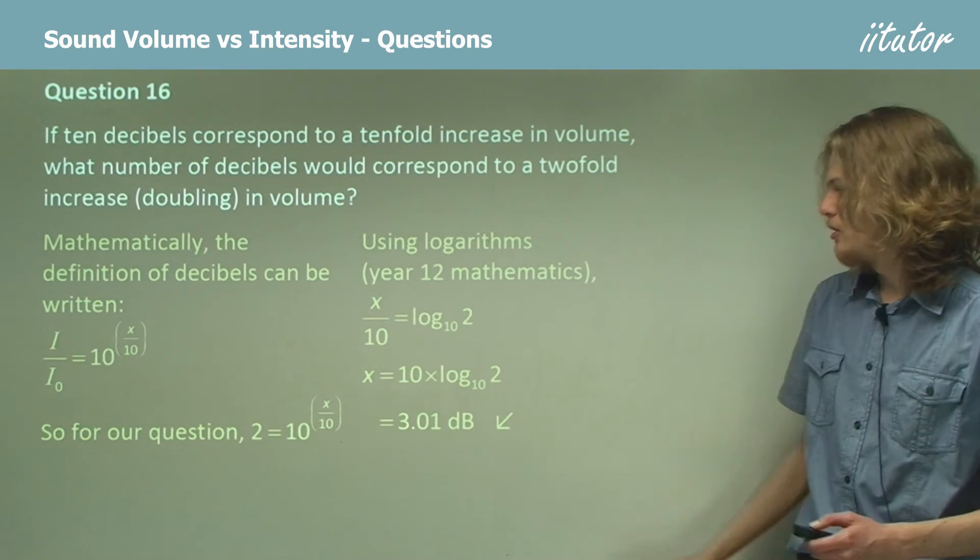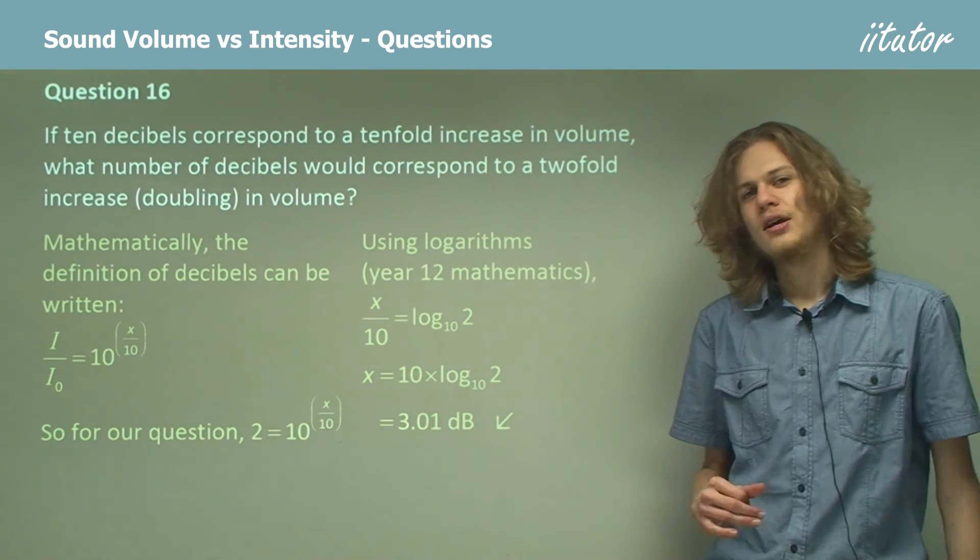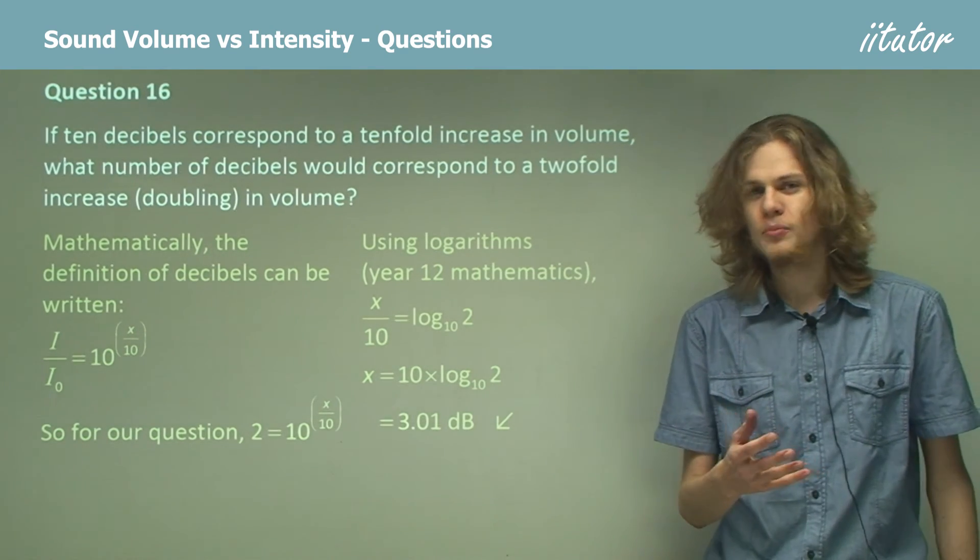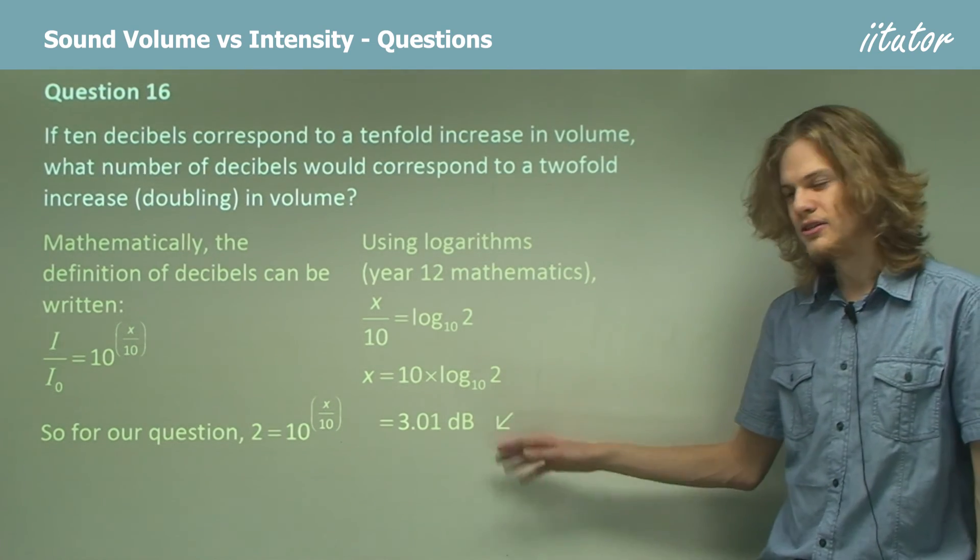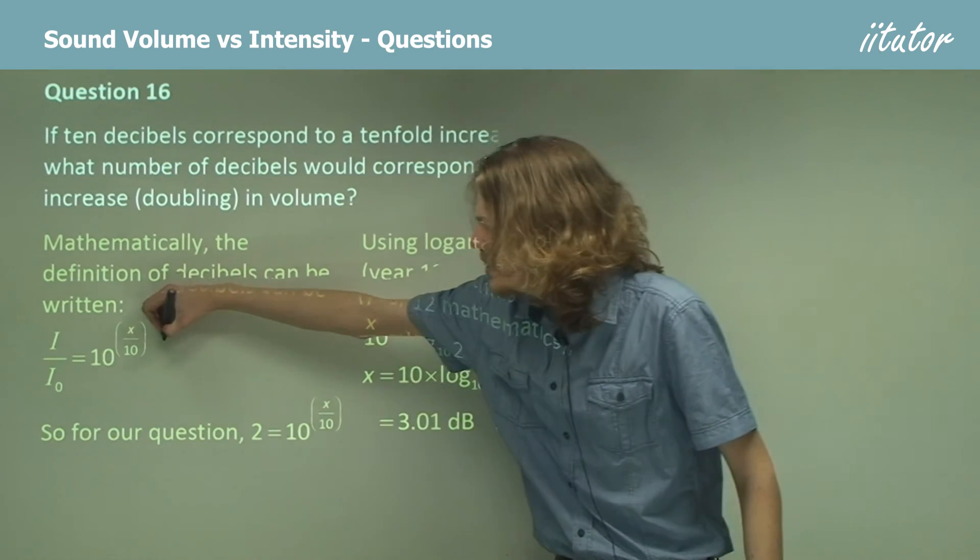So if we take the log base 10 of 2 and we multiply it by 10, then we get a number of 3.01. So that means that if we increase the number of decibels by 3.01, then we double the intensity of the sound. If you want, you can check this by substituting it to this equation here.